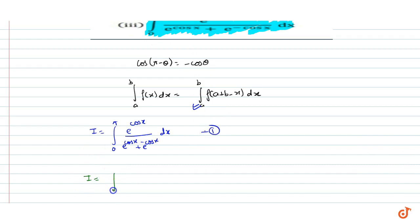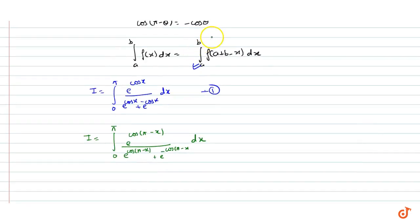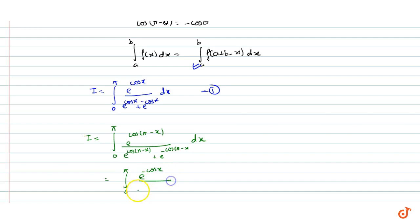Thamara I convert ho jaega integration from 0 to pi, e to the power cos of (pi minus x) upon e to the power cos of (pi minus x) plus e to the power minus cos of (pi minus x), dx. Tho cos of (pi minus x) to minus cos x ke equal ho jaega. Tho I ho jaega integration from 0 to pi, e to the power minus cos x upon e to the power minus cos x plus e to the power cos x, dx.